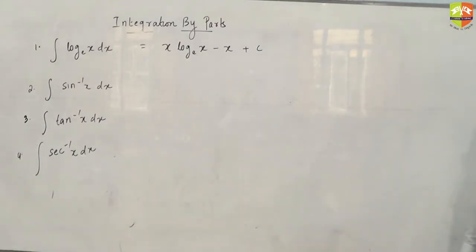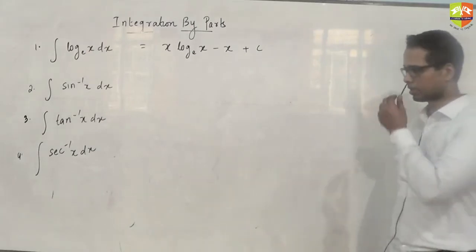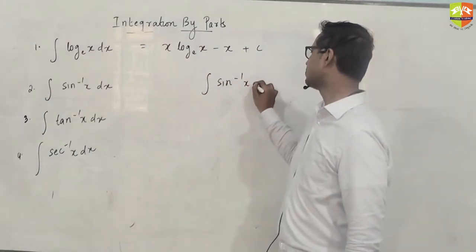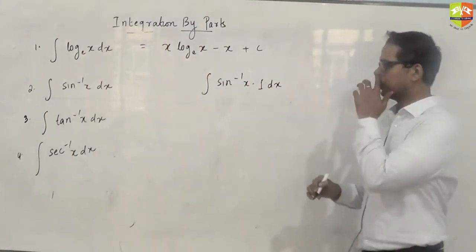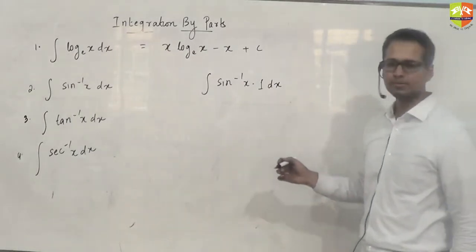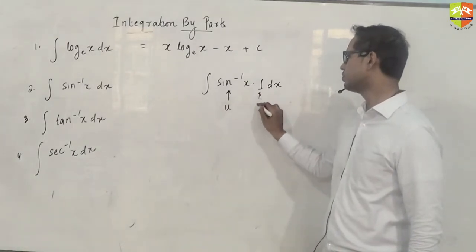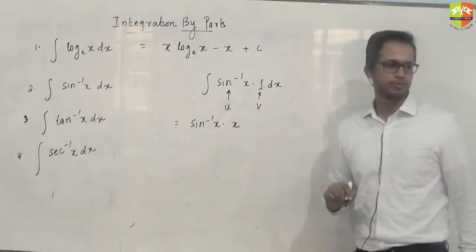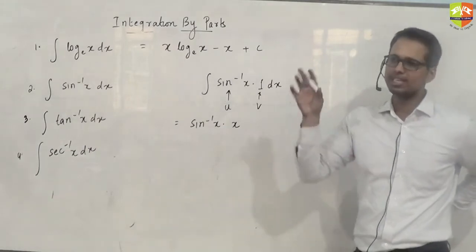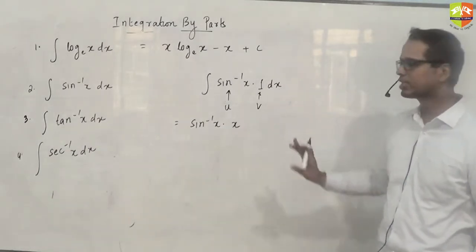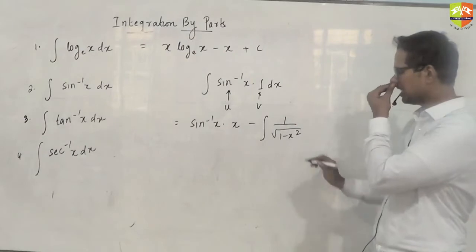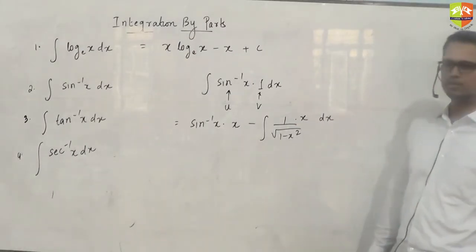First one is x log x minus x plus c. Okay, integration of sin inverse x, there are two ways to do it. One is write sin inverse x as sin inverse x times 1. u, V. So using integration by parts, it's u times integral of 1. Don't write a c in between. c has to be kept for the end. Minus, derivative of this will be 1/√(1-x²) into x.